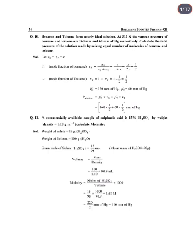Numerical: Calculate the mole fraction of ethanol in a sample of rectified spirit which contains 92% ethanol by mass. Taking 100 g of rectified spirit: mass of ethanol = 92 g, mass of water = 8 g. Moles of ethanol = 92/46. Moles of water = 8/18. Mole fraction of ethanol = moles of ethanol divided by (moles of ethanol + moles of water) = 0.82.